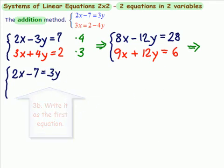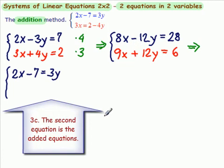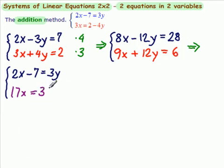Now the second part here is the blue plus red is purple. 8x and 9x is 17x. Since these are eliminated, equals 28 and 6 is 34.